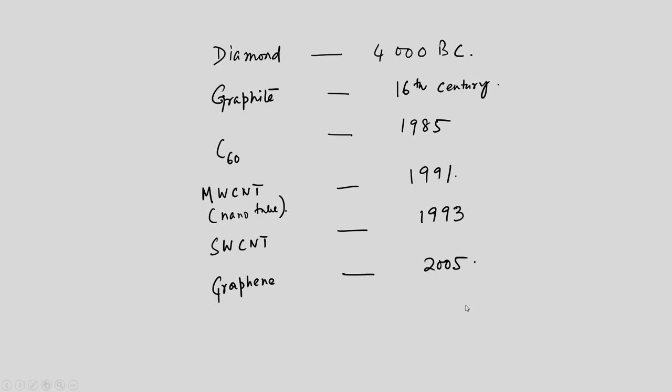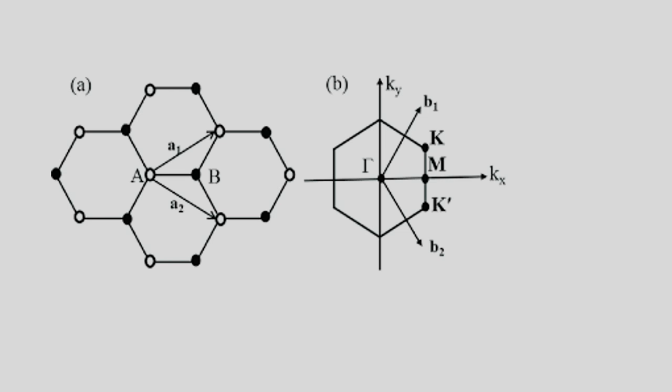Let us study the structure of Graphene. There are open atoms and closed atoms — these are called A and B atoms, or A and B sublattices. The unit cell contains these two atoms. This is the Brillouin zone. If you have a flat-top hexagonal shape in real space, the momentum space structure will be hexagonal as well. In real space you have a honeycomb structure, and in momentum space you also have a honeycomb structure.